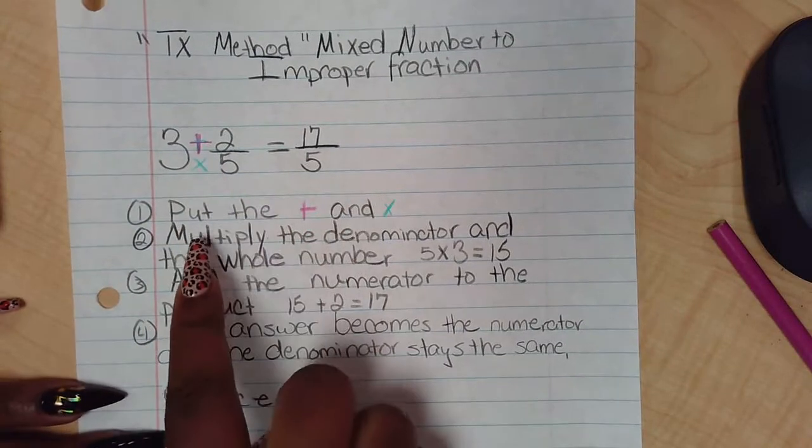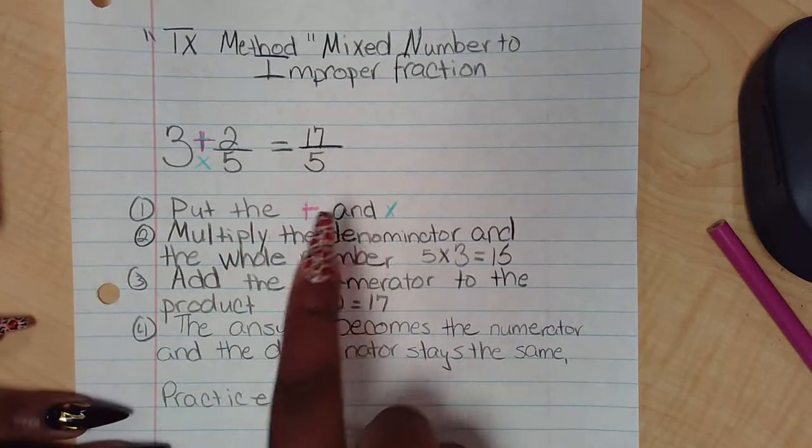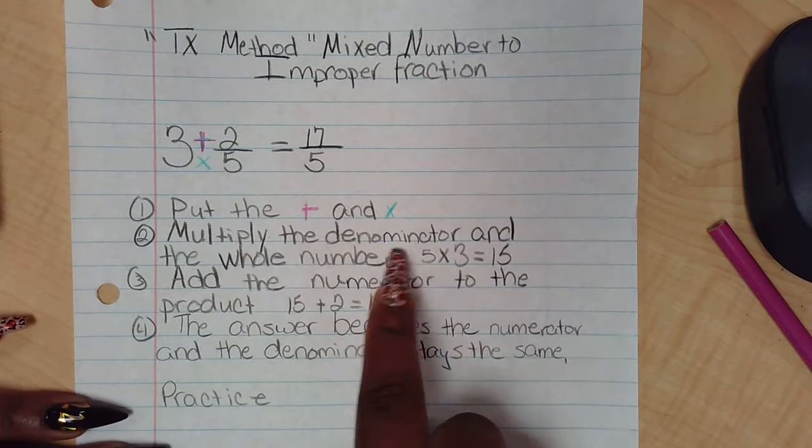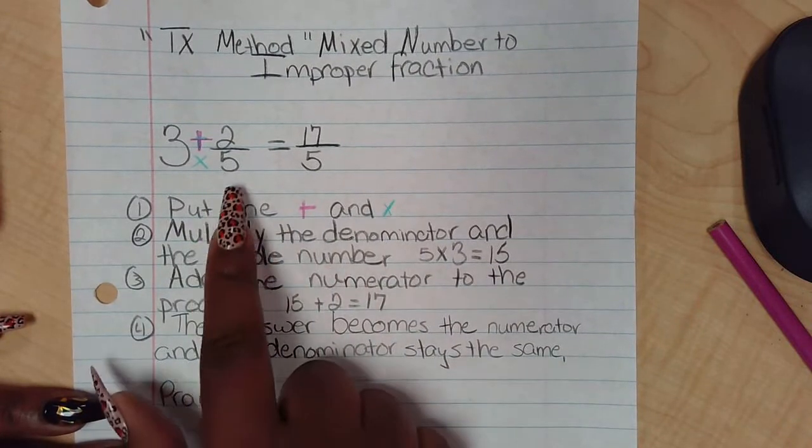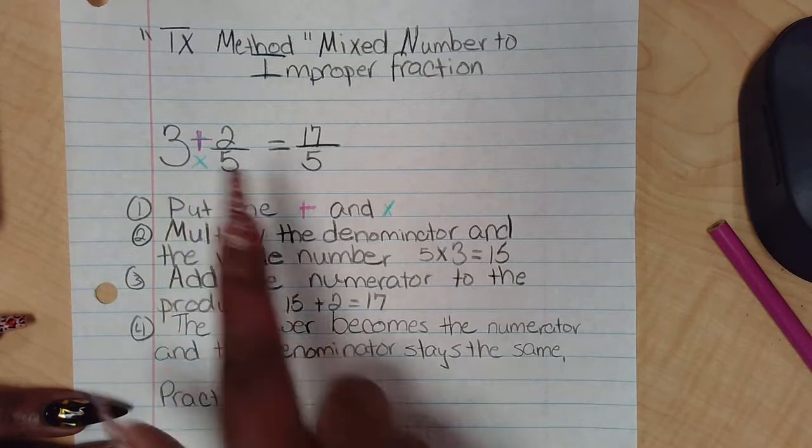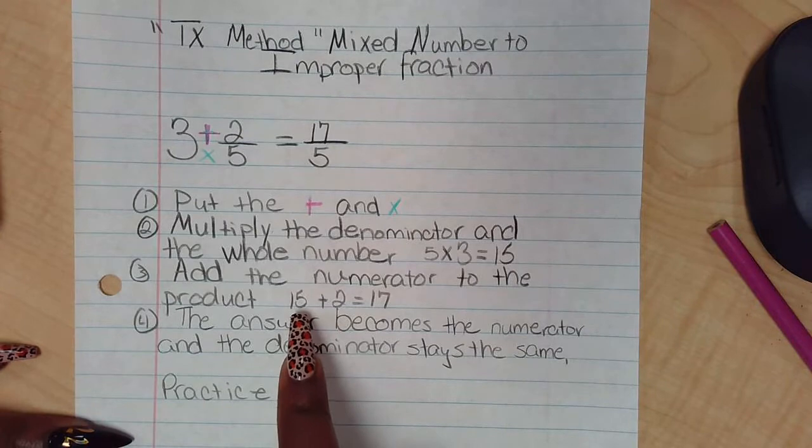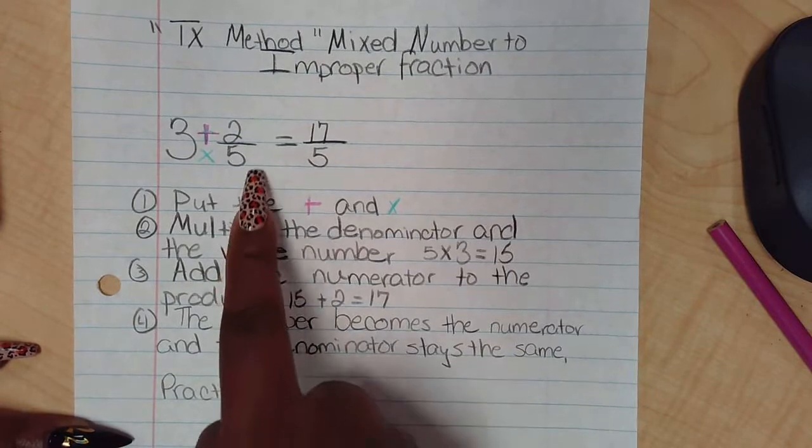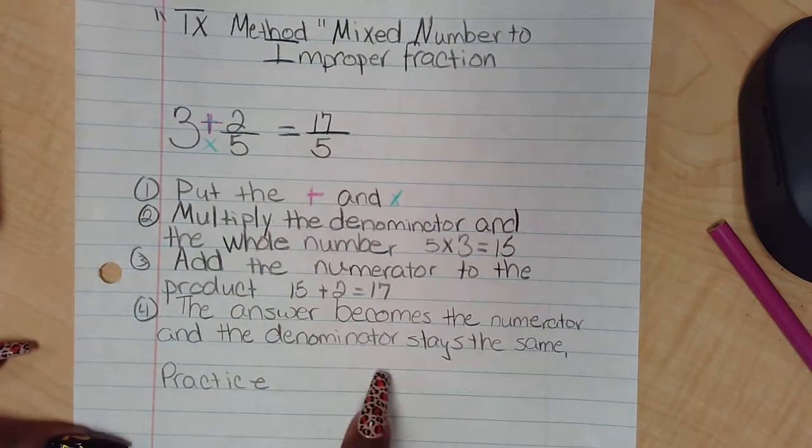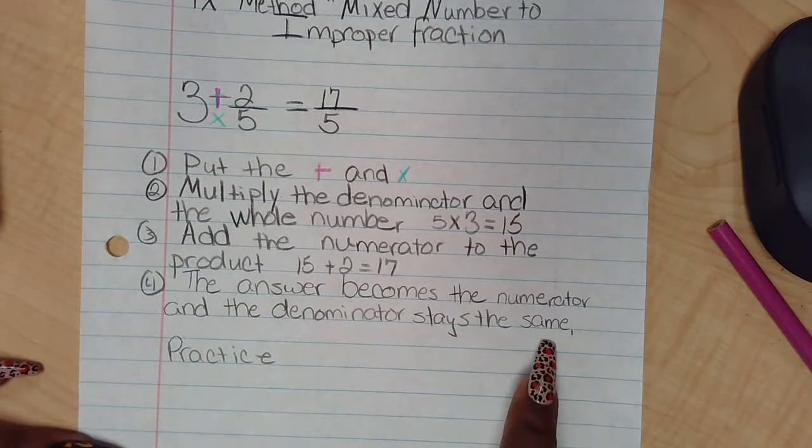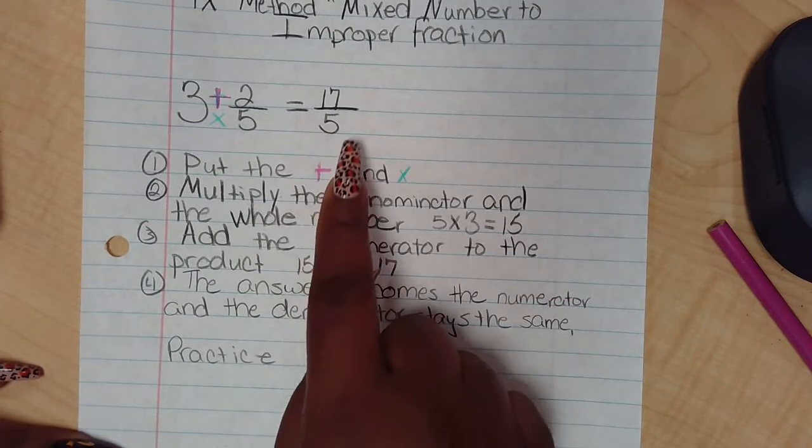Here I put a T and I put an X. Step one, put the T and X. Then it says multiply the denominator and the whole number, so I multiply 5 times 3, which gives me 15. It says add the numerator to the product, so 15 plus 2, because that 2 is my numerator, equals 17. The answer becomes the numerator and the denominator stays the same, so my answer is 17 over 5.